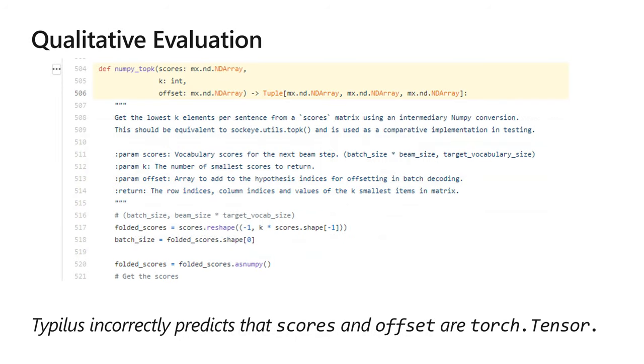Of course, not all type suggestions are correct. Some mistakes have to do with the deeply structured nature of types or with partial context. Here, we highlight an interesting case. TypeLus suggests for the parameters scores and offset the type torch.tensor, but the ground-truth annotation is different. Interestingly, torch.tensor and mx.nd.ndarray are classes representing n-dimensional arrays, but in two different deep learning libraries. This suggests that conceptually, TypeLus represents such arrays in a close-by location in the type space, capturing some semantic similarity between those two classes.